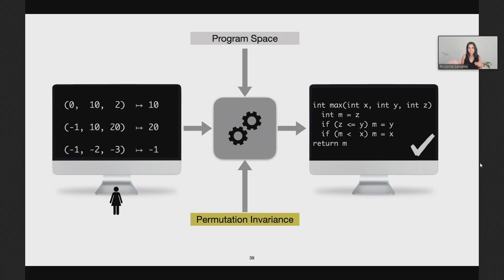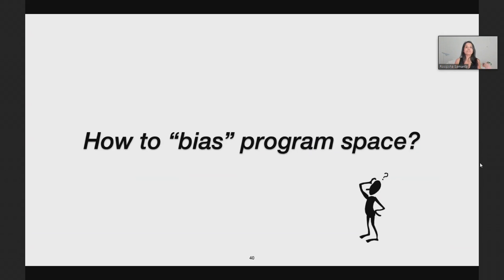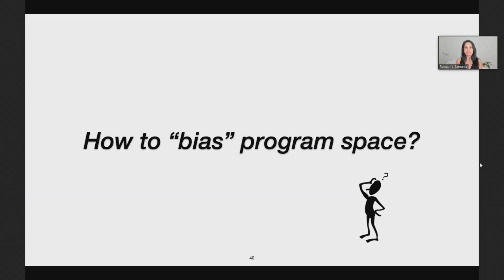Permutation invariance is a relational property, and this is clearly an instance of applying a semantic bias to the search space. So perhaps you are thinking: how should one apply this bias? How does one bias the program space towards finding programs that satisfy permutation invariants? We could ask an oracle or the user to write up a logical formula that encodes permutation invariants and ask the synthesizer to enforce it, but this would defeat all the tractability arguments I made earlier for inductive synthesis. So we need to apply this bias efficiently using some partial specification of permutation invariants.